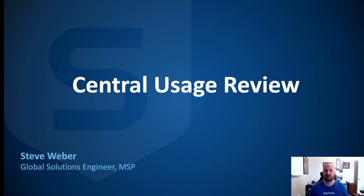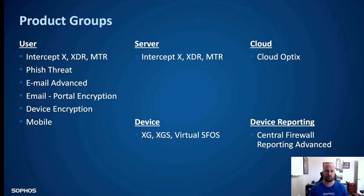Welcome everyone. Today we're going to take a look at the Central Usage Review. To do that, we're going to start with the product groups. The product groups are divided up into five categories.